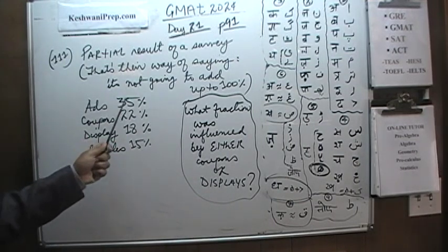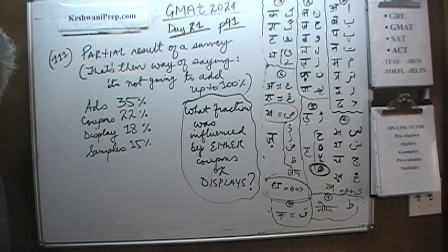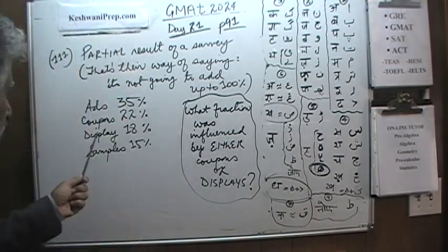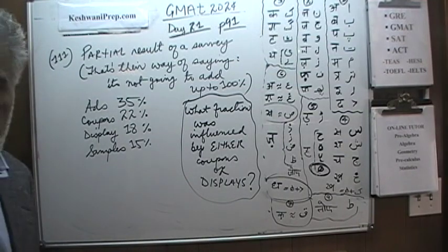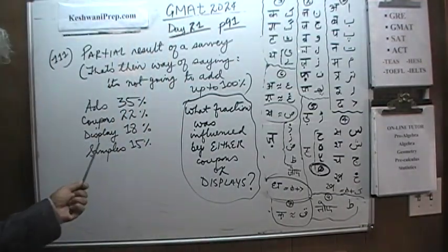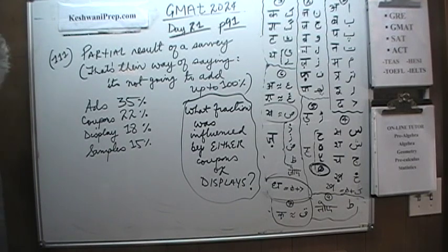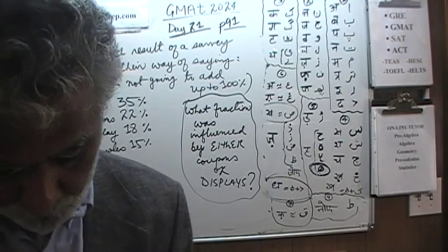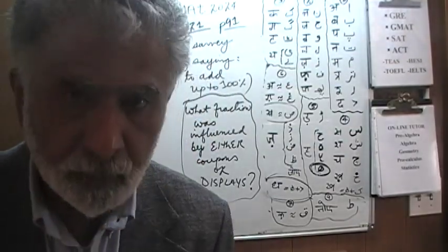What fraction was influenced either by coupon or displays? So we are told that we took a survey and we asked people, why did you buy this product? 35% of people said I saw the ad for the product. 22% of people said that I got a coupon in the mail. 18% said I saw a display in the window. And 15% said I tried the sample and I liked it. Go ahead, do it yourself.